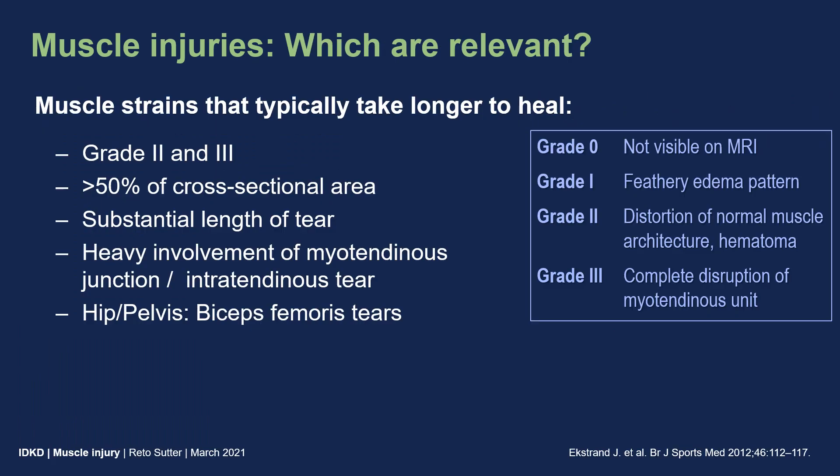Which muscle injuries are clinically relevant? Muscle strains that take longer to heal are grade 2 and 3, with distortion or complete disruption of the muscle architecture. Over 50% of cross-sectional area involvement and extensive longitudinal extension take longer to heal, as does the involvement of the myotendinous junction.